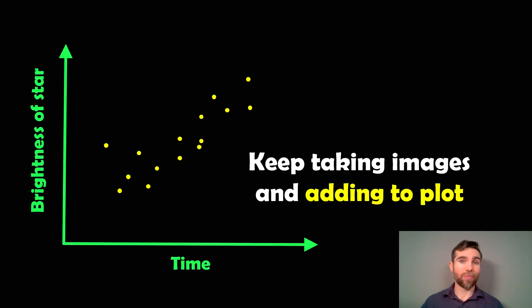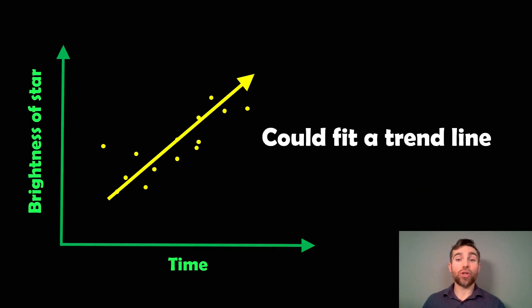You take a picture, take another picture, then another one. Over time you should build up a larger plot or dataset with all of these data points. You've got the brightness of the star against time, and if you get enough data points you should be able to fit some trend line to get a best fit to those data points. This one here suggests that over time this star is increasing in brightness, so you can fit that trend line.